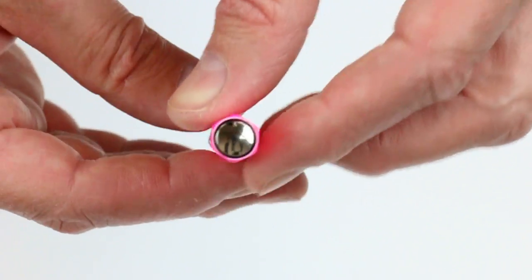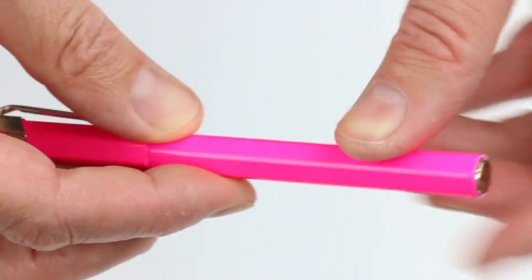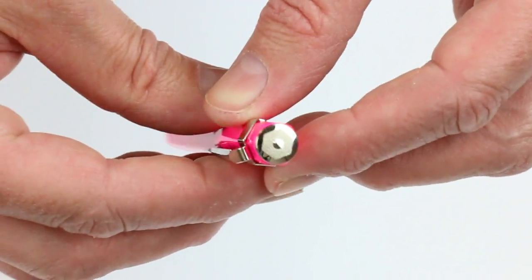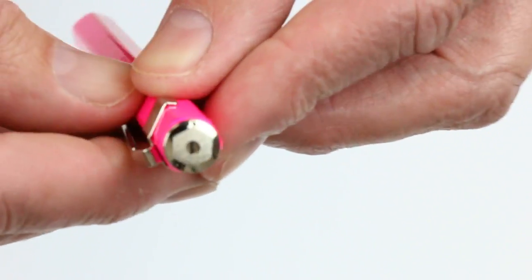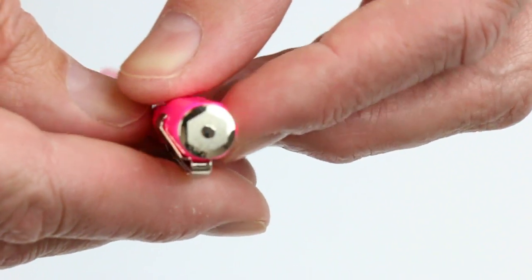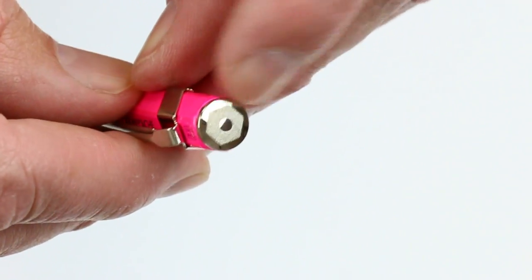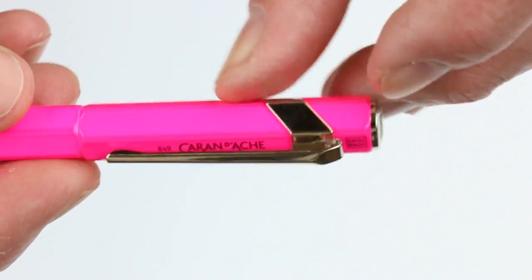It has a hexagonal shape to the cap and barrel. Great design for keeping the pen in place and it doesn't roll off the table. You can see the same hexagonal shape on the top of the cap of the pen in that chrome medallion.